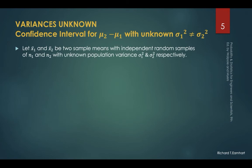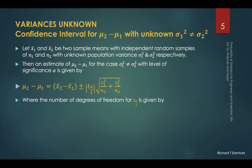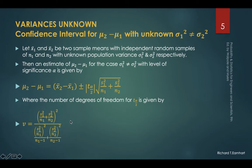For unknown variances that are not equal, the formula for the difference between the two population means is similar to the first case, except we replace z by t sub alpha over 2, and sigma 1 squared and sigma 2 squared are replaced by S sub 1 squared and S sub 2 squared. For the t value, we use alpha over 2 from the given degree of confidence. The number of degrees of freedom is computed using a separate formula, and we round up to a whole number.